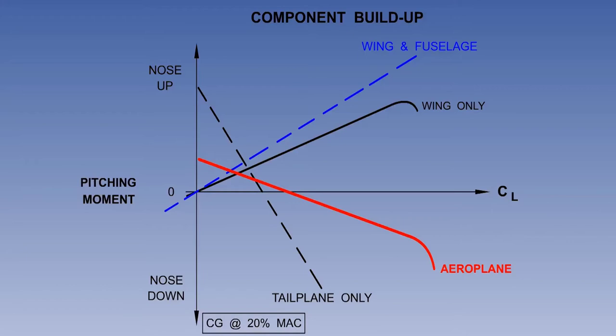Notice the location of the CG in the illustration is listed as 20% MAC. The mean aerodynamic chord is used as a reference point from which the location of the CG is measured as a percentage. The higher the percentage, the further aft the CG.